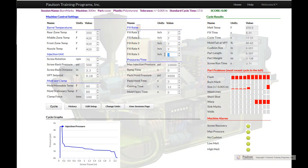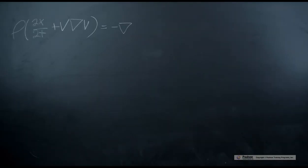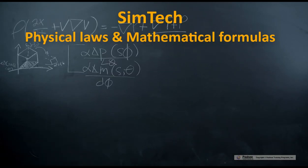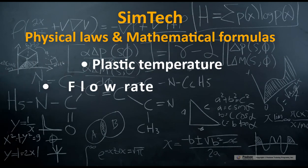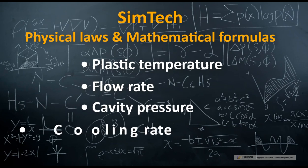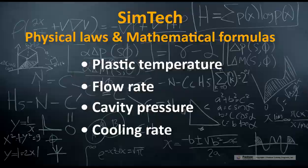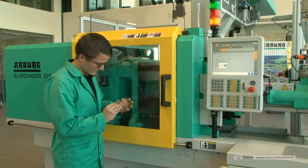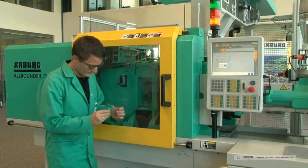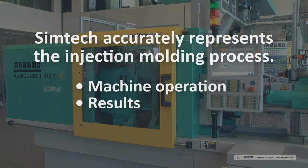The engine behind SimTech is based on years and years of research and testing. SimTech uses physical laws and mathematical formulas to calculate the effects of plastic temperature, flow rate, cavity pressure, and cooling rate during each cycle. A study at an injection molding research laboratory showed that SimTech accurately represented the injection molding process for training purposes, both in machine operation and in results.